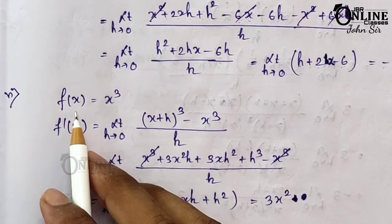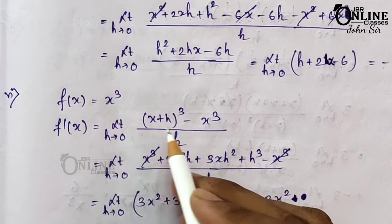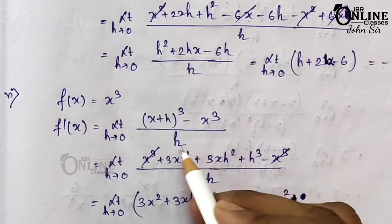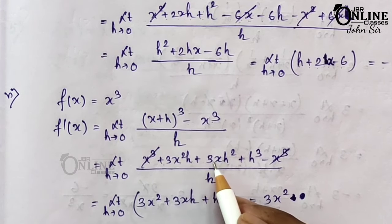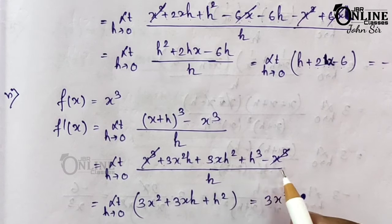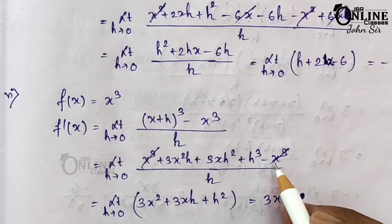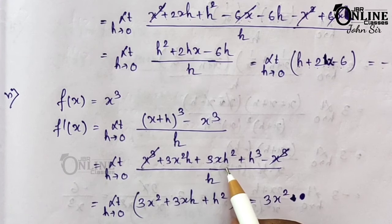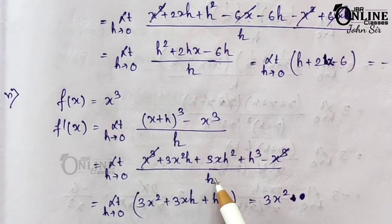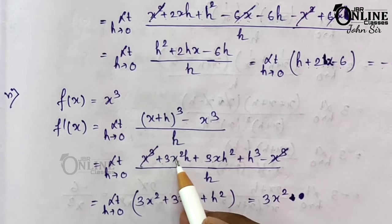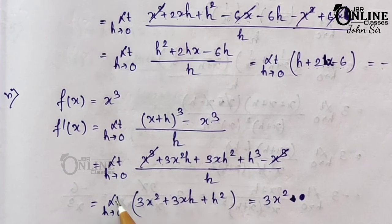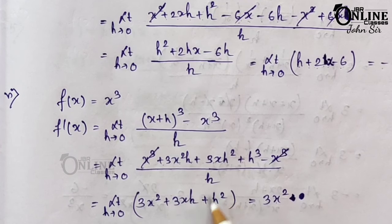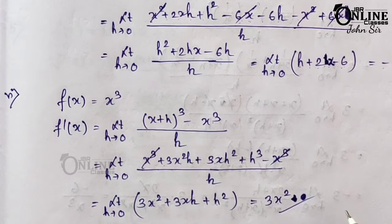Sum number 6: f(x) = x³. So f'(x) = limit h→0 of [(x+h)³ - x³] / h. Expanding: [x³ + 3x²h + 3xh² + h³ - x³] / h. After x³ cancels, take h as common: 3x² + 3xh + h². Substituting h→0: f'(x) = 3x².